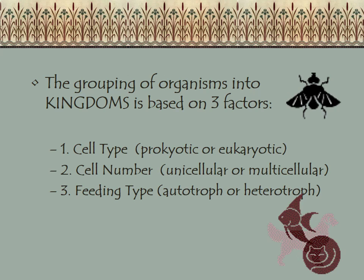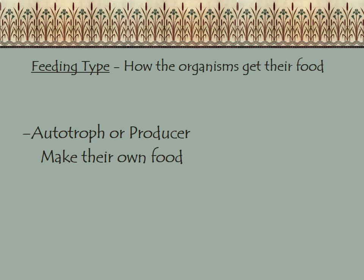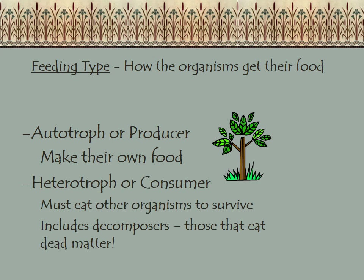Feeding type is how organisms actually get their food. There are two types. The first is an autotroph — auto means self, troph means energy — so autotrophs make their own food, like plants. The second type is a heterotroph, or consumer. Heterotrophs have to eat others to get their energy, like animals.